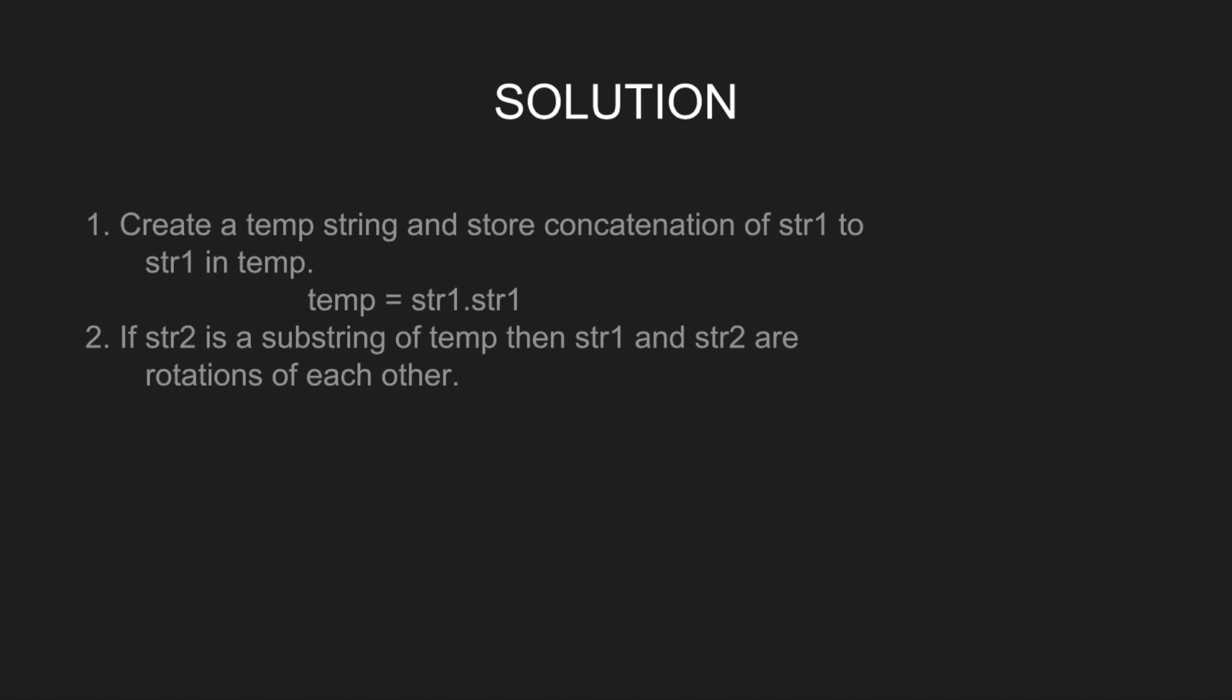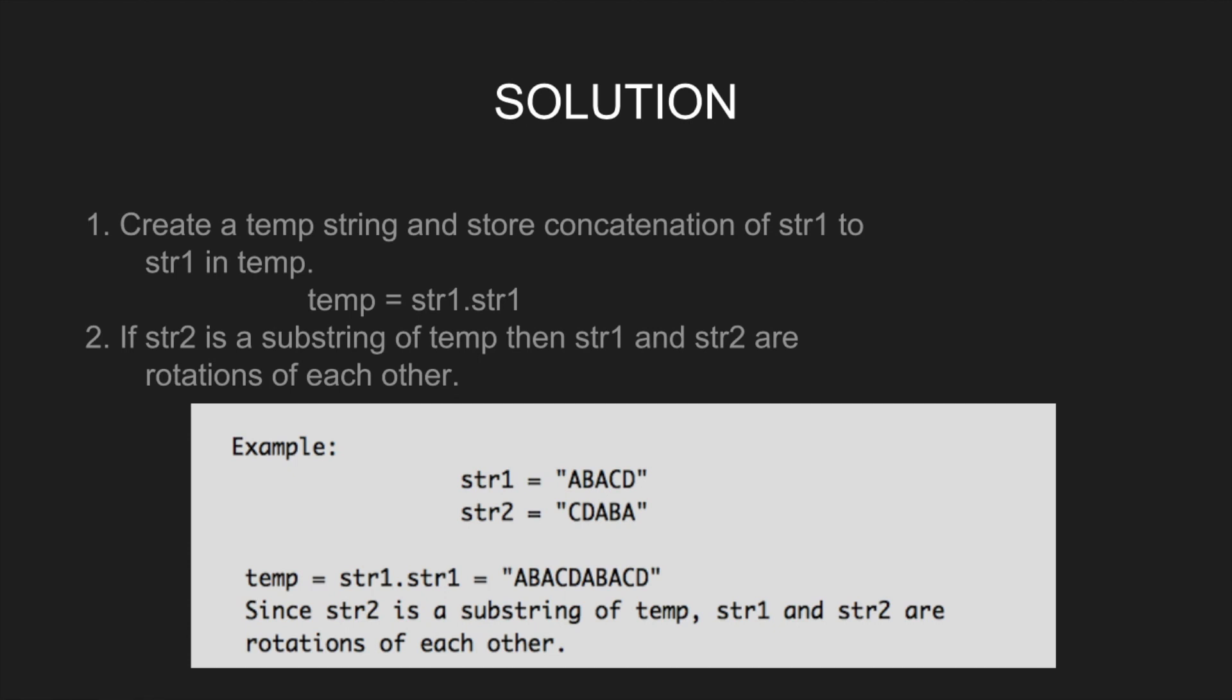For example, let s1 equal ABACD, string2 equal CDABA. temp is equal to string1 dot string1 equal ABACDABACD. Since string2 is a substring of temp, string1 and string2 are rotations of each other.